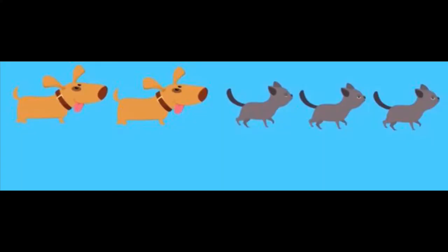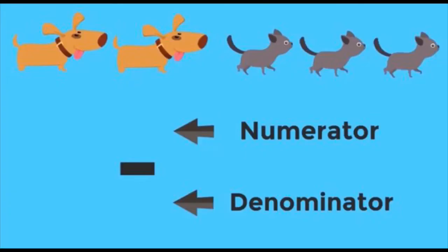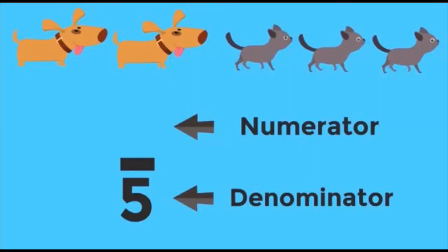There are five pets. Two are dogs and three are cats. Remember what a fraction looks like: a line in the middle, the top number is the numerator, the bottom number is the denominator. What is the denominator? Five is the denominator — it tells the total amount of pets.